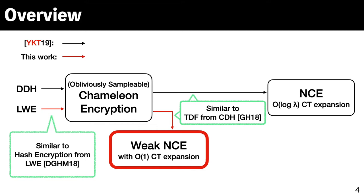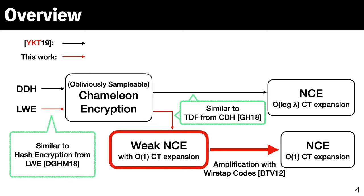Then we use this Chameleon encryption to construct non-committing encryption with constant ciphertext expansion. However, the scheme only satisfies weak correctness and weak security. So we define a weak version of NCE and prove the construction is indeed this weak non-committing encryption. The construction is similar to the construction of trapdoor functions from the CDH problem by Garg and Hajiabadi. Finally, we show how to amplify the weak NCE into full-fledged NCE while keeping its ciphertext expansion constant. In this transformation, we use an information-theoretical primitive called wiretap codes.